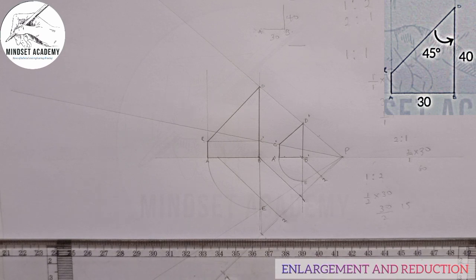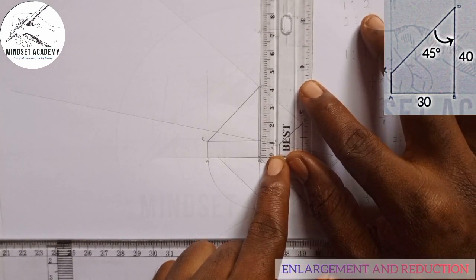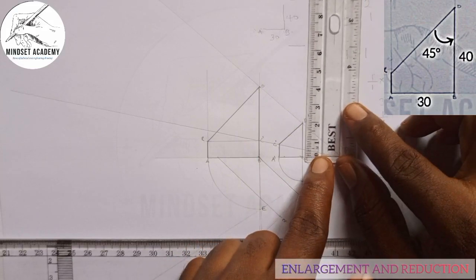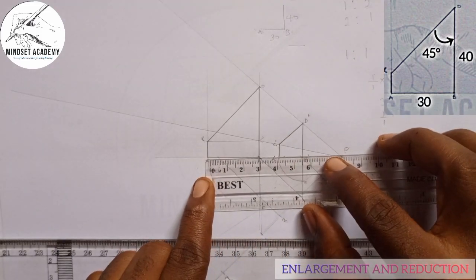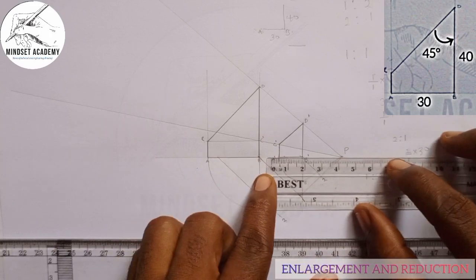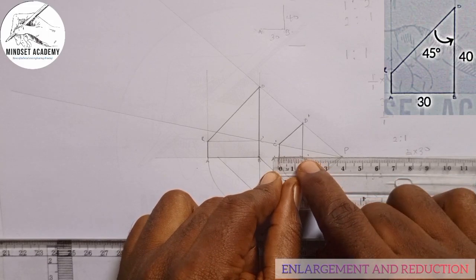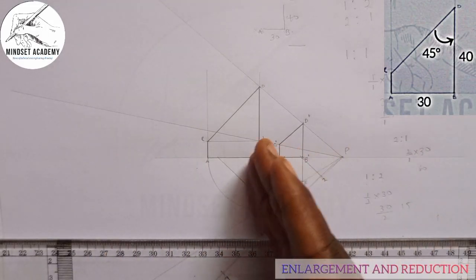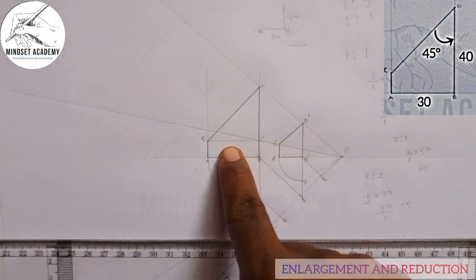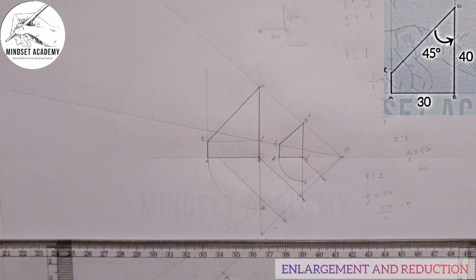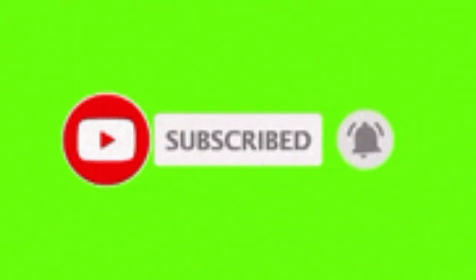What I've done here is reduced the figure, and we can confirm this: from here to here is 40, so here is expected to be 20. And if the base here is 30, then here is expected to be 15. This is what we call reduction — we've reduced the scale from the main size to half the size. In the next video I'll show you how to enlarge. Stay tuned, thanks for watching, and don't forget to subscribe, like, and share.